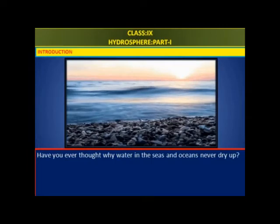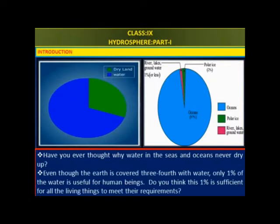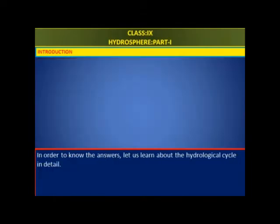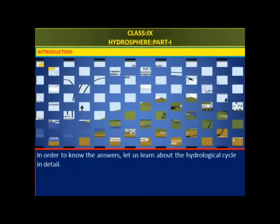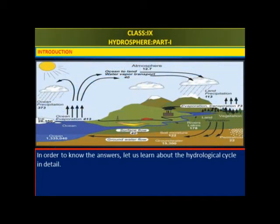Have you ever thought why water in the seas and oceans never dries up? Even though the Earth is covered three-fourths with water, only 1% is useful for human beings. Do you think this 1% is sufficient for all living beings to meet their requirements? In order to know the answers, let us learn about the hydrological cycle in detail.